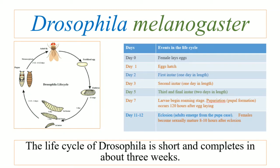On day 11 or 12, the process of eclosion starts. Eclosion is basically the emergence of adults from the pupa case. The females become sexually mature eight to ten hours after eclosion.